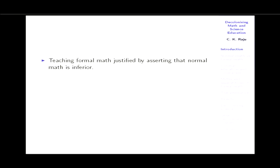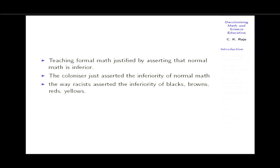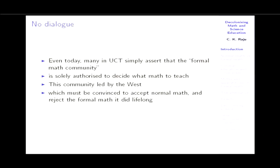Teaching formal math is justified by asserting that normal math is inferior. The colonizer simply asserted that inferiority — just as racists asserted that blacks are inferior, browns are inferior, reds are inferior, yellows are inferior. No need for proof, and no dialogue even today. Last week I was at UCT, and they said it has to be decided by the formal math community, which is solely authorized to decide what math to teach — and this community happens to be led by the West. I'm very happy I've had a dialogue here.